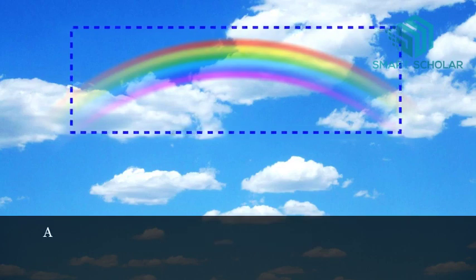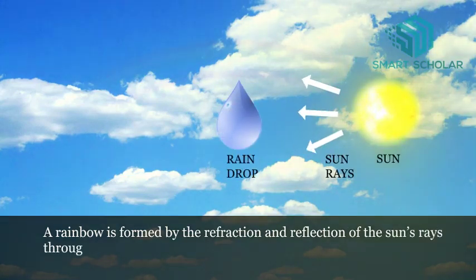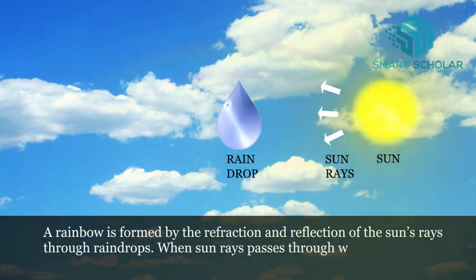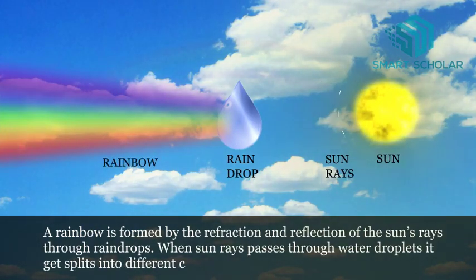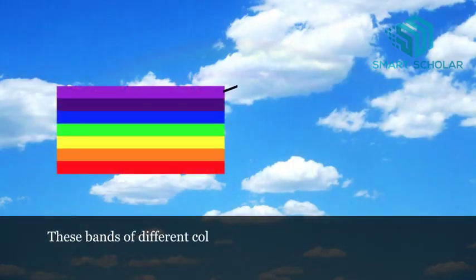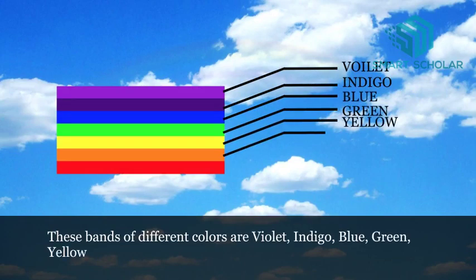A rainbow is formed by the refraction and reflection of the sun's rays through raindrops. When sun rays pass through water droplets, they get split into different colors. These bands of different colors are violet, indigo, blue, green, yellow, orange, and red - VIBGYOR.